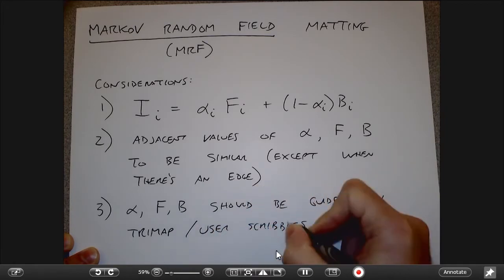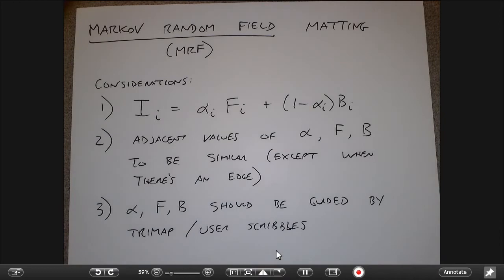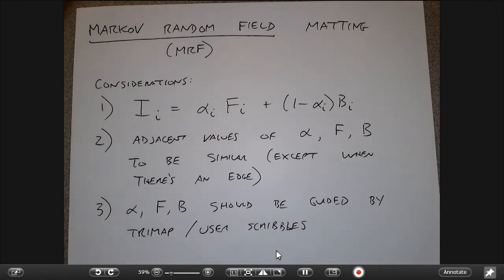The third consideration is that alpha, foreground, and background should be guided by the TriMap or by user scribbles. The user gives some input indicating foreground and background, and we figure out the middle ground where the alpha values are a fraction. What we're going to do today is set up what's called an energy function — more specifically, a Gibbs energy.